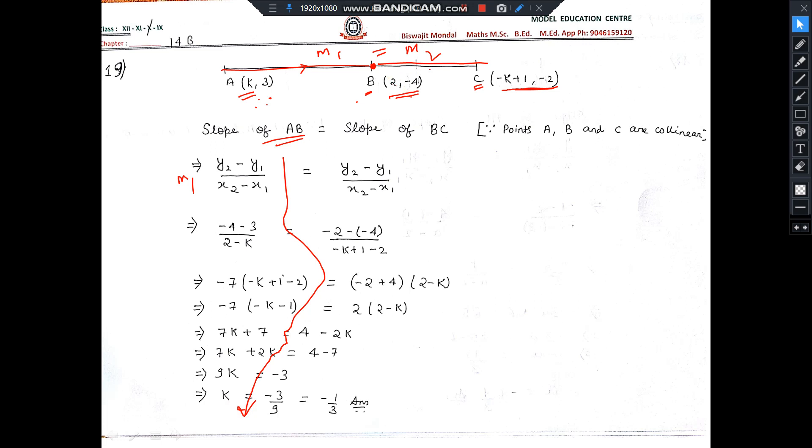Now, since the slopes are equal, you can write slope of AB equal to slope of BC. Since it is collinear, slopes are equal. Here it is written: points A, B, C are collinear. So here also, this one is M2.